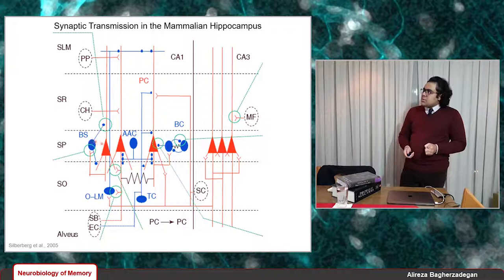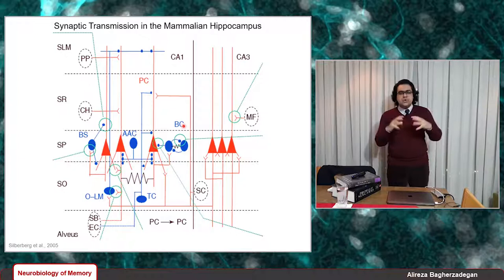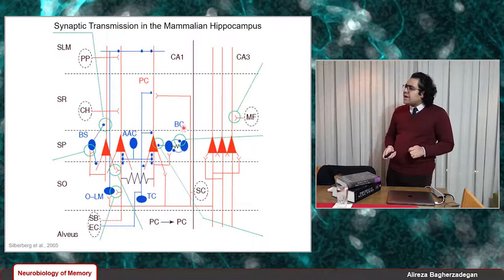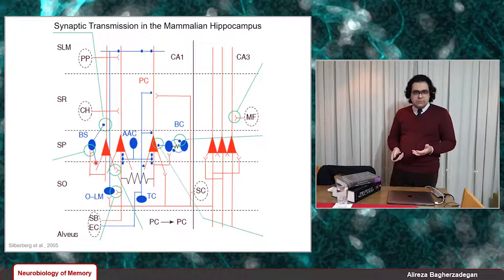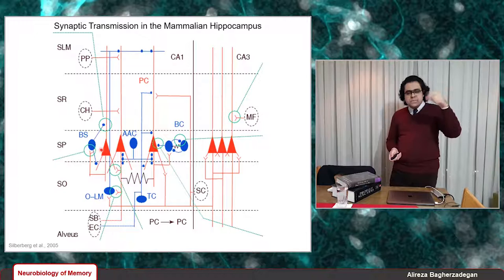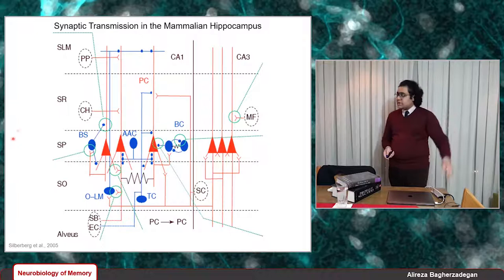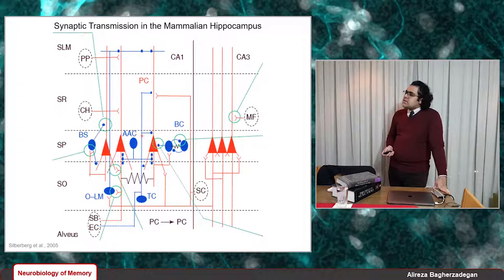Scientists working on CA1 microcircuits believe there are two general classes of interneurons. One class provides perisomatic inhibition — basket cells, axoaxonic cells, and bistratified cells — targeting the soma, basal dendrites, axon initial segments, and sometimes proximal dendrites. Another class provides inhibition to very distal apical dendrites, like the oriens lacunosum-moleculare cells.